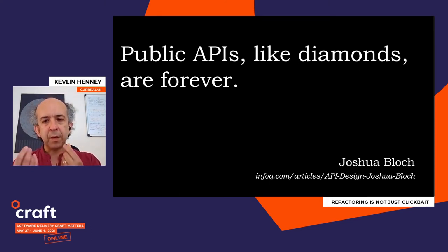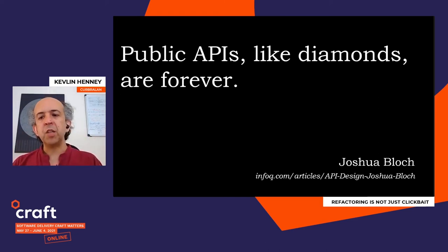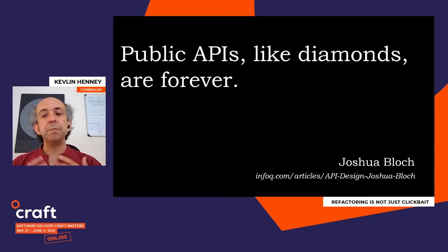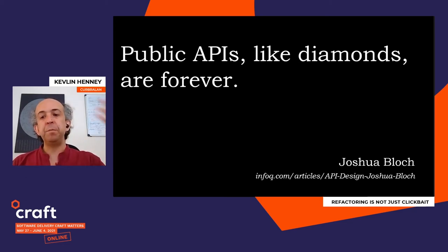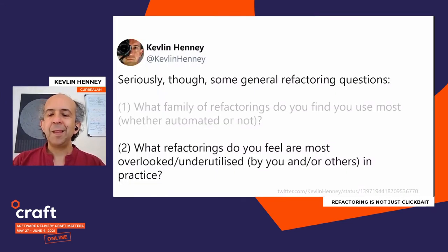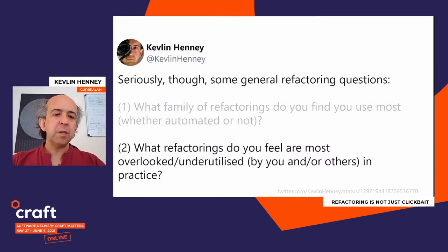The point is: public APIs, like diamonds, are forever. You want to restrict publication as much as possible. Narrow it and understand your policy of evolution and changes. That's not an automation thing — it is actually a deeper design thing. So refactorings are kind of like the lubrication of change, but they are not the big picture. You need to have intent and purpose. Refactoring is part of a bigger process — we call that process design.